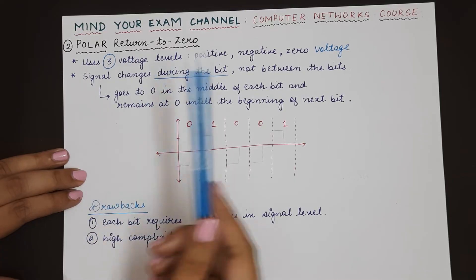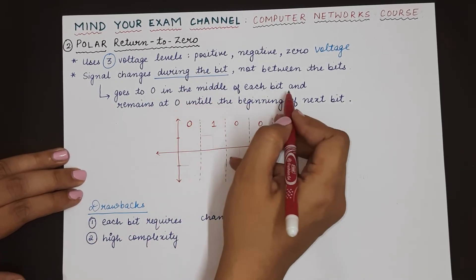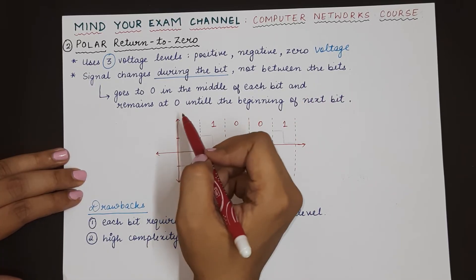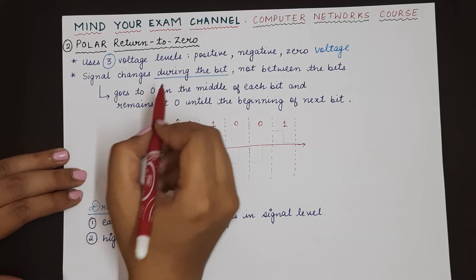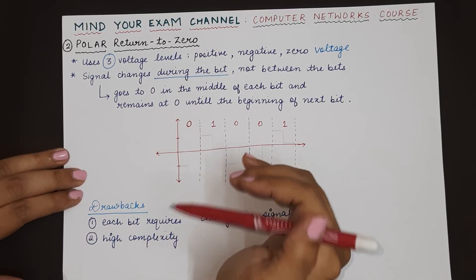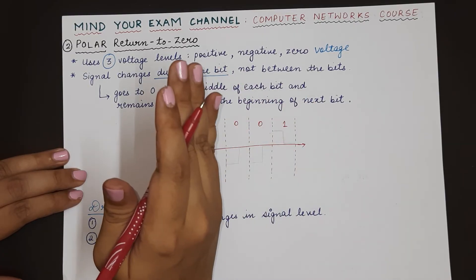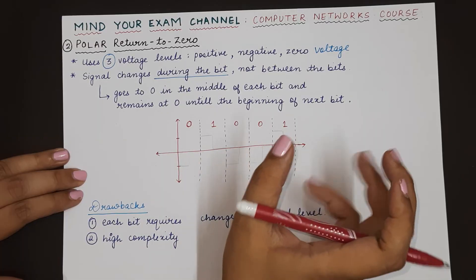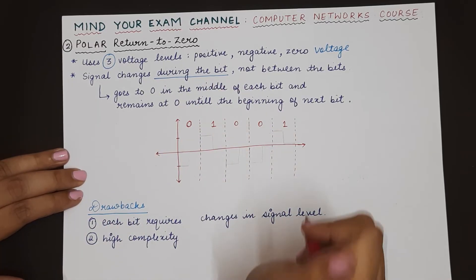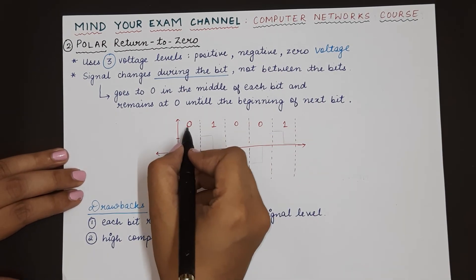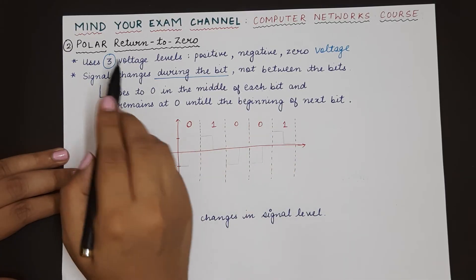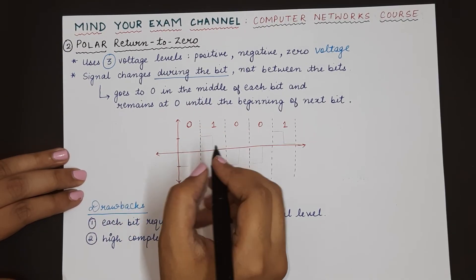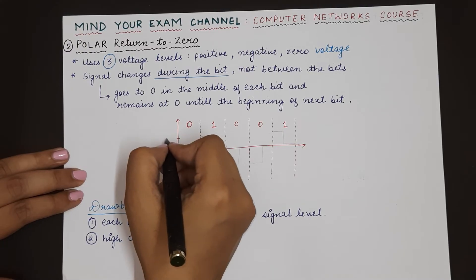During each bit, the signal changes — it goes to 0 in the middle of the bit and remains there until the beginning of the next bit. This helps in synchronization because when the signal goes to 0 in the middle of the bit and stays there before the next bit starts, that 0 voltage essentially signals that the next bit is starting, giving the receiver time to synchronize its clock. For example, let's represent the digital data 01001 using polar RZ — 0 will be represented by a negative voltage.